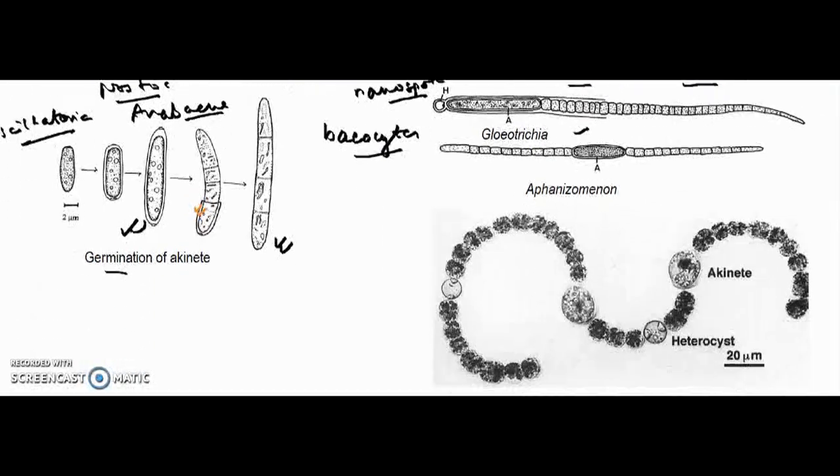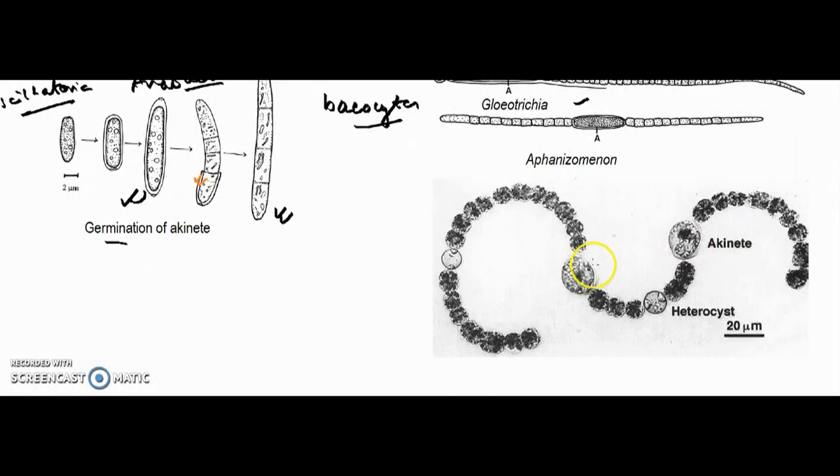These are the reproductive structures of Cyanophyceae. In Anabaena, you can see akinetes and heterocysts along with vegetative cells. This Anabaena shows different arrangements of vegetative cells, akinetes, and heterocysts. Both akinetes and heterocysts are reproductive structures.